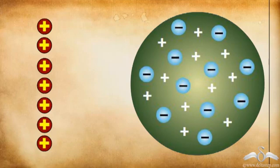Rutherford performed an experiment in which he took alpha particles. Alpha particles are positively charged particles. He projected these particles on the atom.